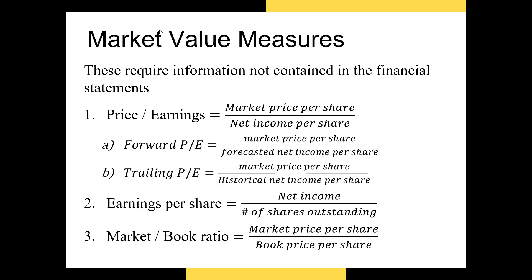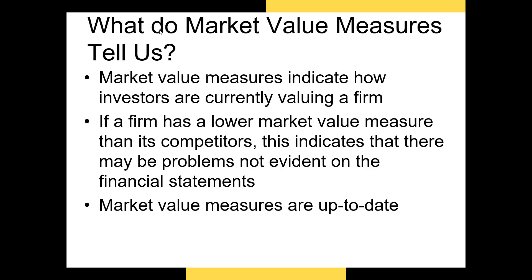There are two formulas for the PE ratio: forward PE and trailing PE. Forward PE is calculated as the market price per share divided by net income per share forecasted over the next year. Trailing PE is calculated as the market price per share divided by historical net income per share over the previous fiscal year. Earnings per share, or EPS, is net income divided by number of shares outstanding — it tells us how much income each share earned over a quarter or a year. The market-to-book ratio is the market price per share divided by the book price per share listed on the balance sheet. Market value ratios tell us how valuable investors believe the firm's stock is right now relative to its historical metrics. The PE ratio tells us how much investors would be willing to pay for one dollar of current earnings per share.